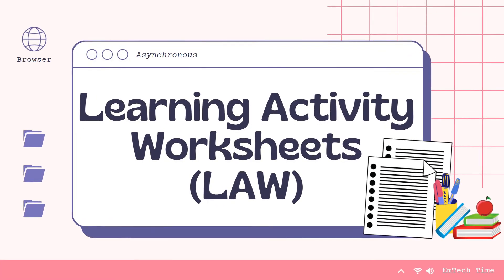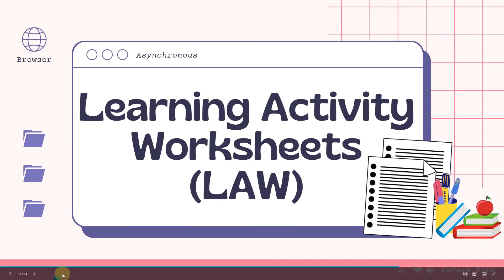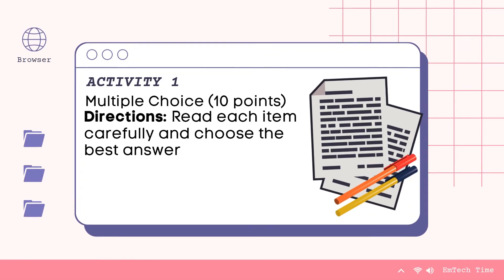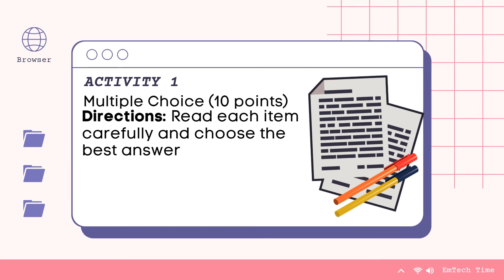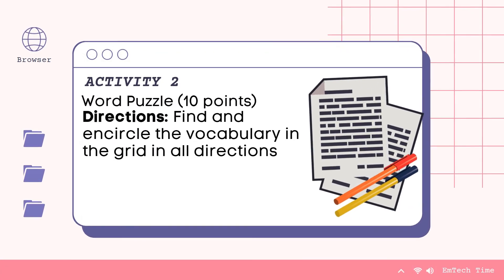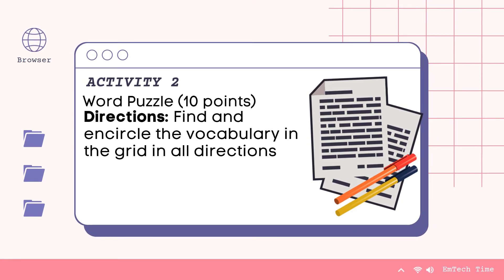Let's move on to answering our learning activity worksheets for this week. For Activity 1, it is a multiple choice type of test. Read each item carefully and choose the best answer — you can write your answer on a separate sheet of paper. The next activity is Activity 2, which is a word puzzle worth 10 points. You need to find and encircle the vocabulary in the grid in all directions. Note: you do not need to answer Activity 3 for this week, so you just need to accomplish Activity 1 and Activity 2.